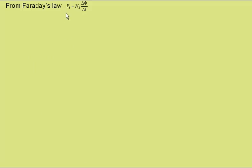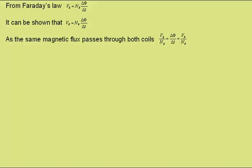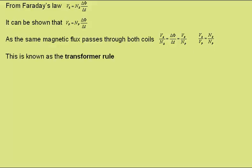From Faraday's law we know that the voltage induced in the secondary coil is given by the number of turns in the secondary coil multiplied by the rate of change of magnetic flux through the secondary coil. Similarly, the voltage in the primary coil is given by the number of turns in the primary coil multiplied by the rate of change of magnetic flux through the primary coil. As the same magnetic flux passes through both coils, the voltage across the secondary divided by the number of turns on the secondary equals the rate of change of magnetic flux, which is the same as for the primary. So we can simplify to this expression — known as the transformer rule.